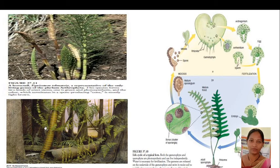To summarize, cryptogames are plants which cannot develop flowers or seeds. They reproduce with the help of spores, and those spores directly develop into a foliage-like or thallus-like plant body. Their reproductive structures are hidden within that foliage or leaf-like structure, and there is no need for development of a typical flower.